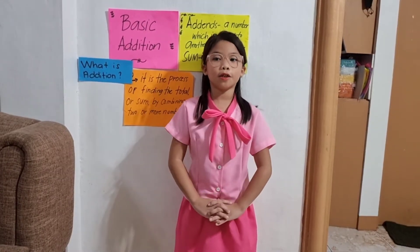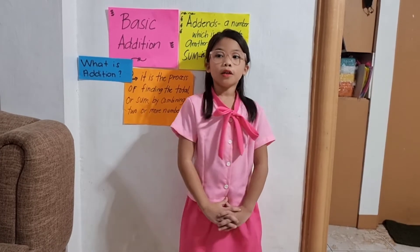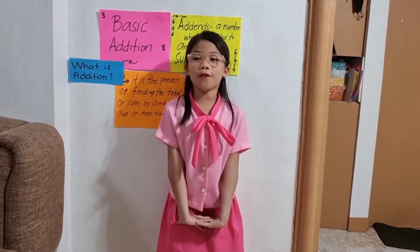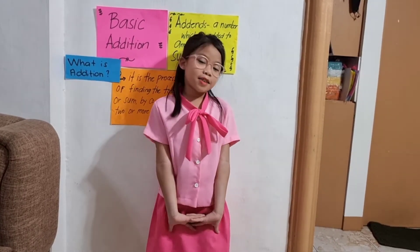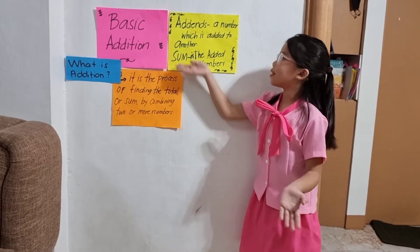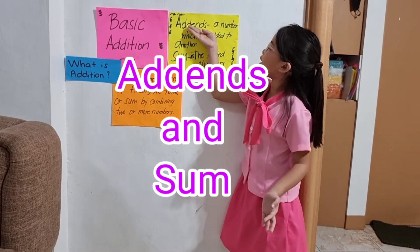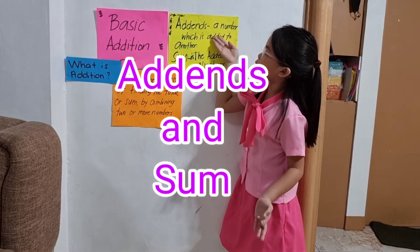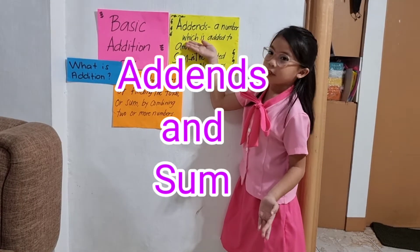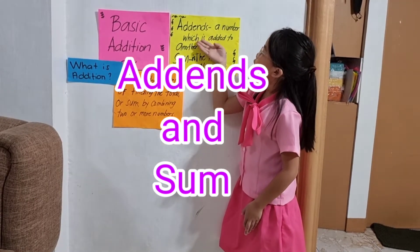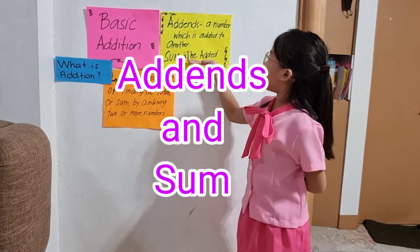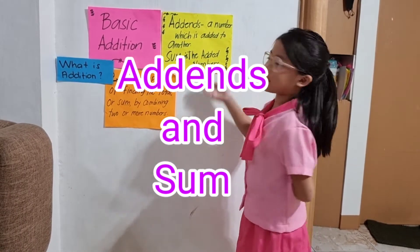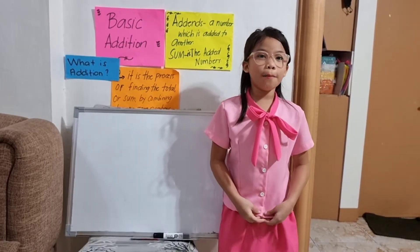So, in addition, we have two variables that we are going to simplify. What is it? Addends — a number which is added to another — are the added numbers.